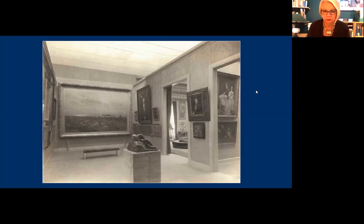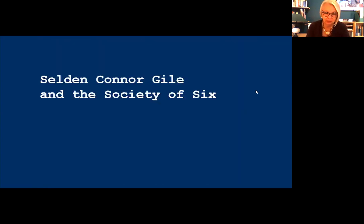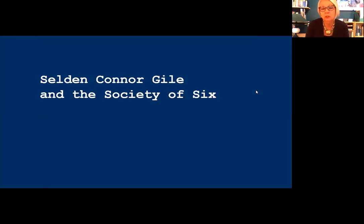What the Armory Show was to New York in 1913, the PPIE was to San Francisco in 1915 — it brought modern art, contemporary art, to Americans, and here to Californians. And the new meant color. After the PPIE, color really burst onto the San Francisco art scene, replacing tonalism as the signature style of the area. The charge was led by Selden Connor Gile and the Society of Six, an Oakland-based group of mostly unschooled artists who sketched together, exhibited together, and moved Northern California art into modernism.